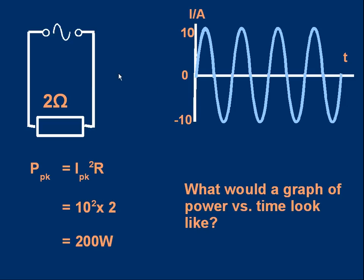Let's start by looking at this very simple circuit. Top left there's an AC supply symbol — two terminals and a wavy line — and we're going to supply a two ohm resistor. Here's the waveform of the current: a graph of current against time. It's sinusoidal, meaning it mathematically follows a sine curve.